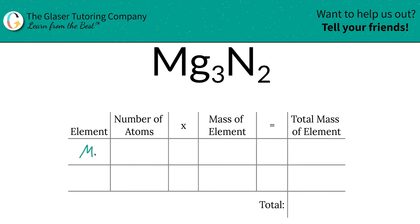The first step is to write the elements we see. So we have magnesium and we have nitrogen. Next is to identify the number of atoms and that's where the subscripts come into play. So there are three magnesium and there are going to be two nitrogen.